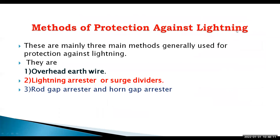Methods for protection against lightning: there are mainly three main methods generally used for protection against lightning - overhead earth wire, lightning arrestors or surge diverters, rod gap arrestors, and horn gap arrestors. By using these methods, we have to protect our electrical equipment against lightning overvoltages.